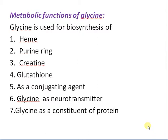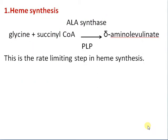The metabolic functions of glycine are: glycine is utilized in the biosynthesis of heme, the purine ring, creatinine, and glutathione. Glycine also acts as a conjugate reagent, and functions as a neurotransmitter and neuromodulator. It is also a constituent of proteins.